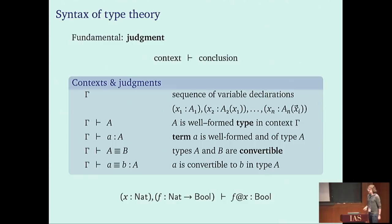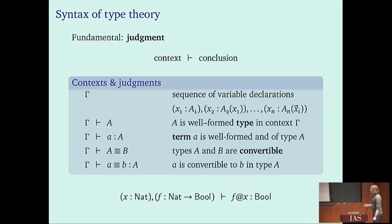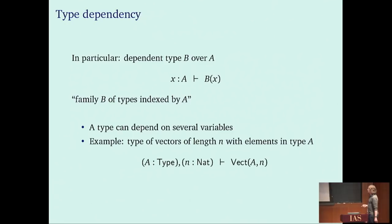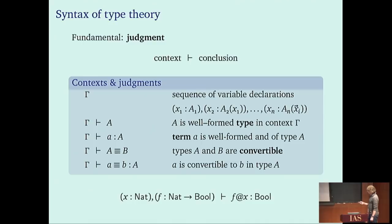Here is a simple example: in context 'x : ℕ, f : ℕ → Bool', we can write 'f(x) : Bool'. The question is whether that is a judgment we can derive. Can such a judgment be derived and is it valid? How does dependency come into this? Dependent types occur as follows: if we have a variable x of type A and a type B(x) where x may occur freely in B, then B is not one type but a type family depending on x, a family of types indexed by A.